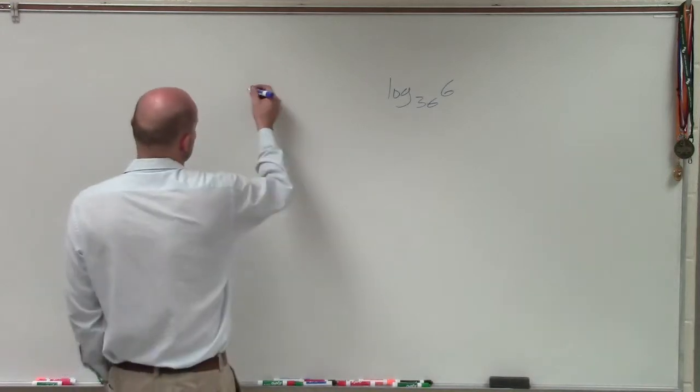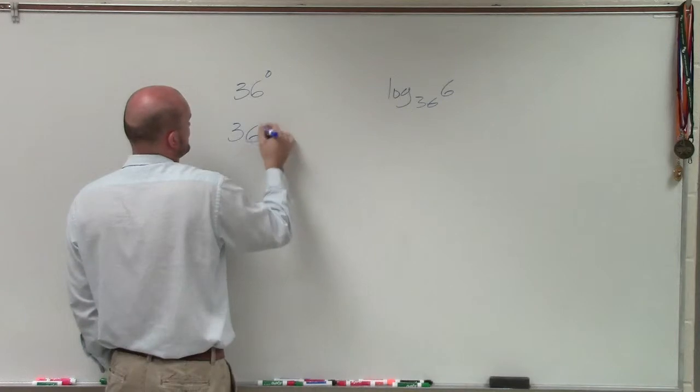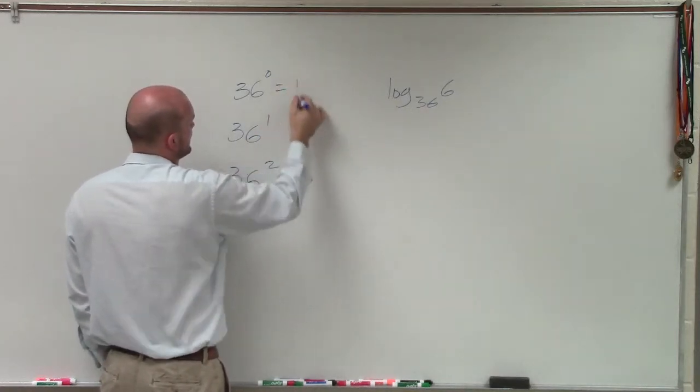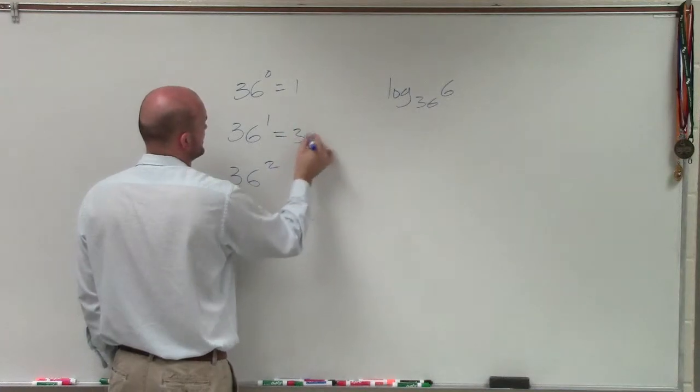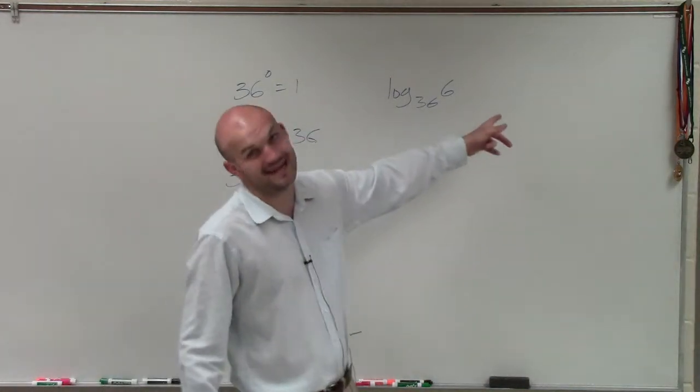So when we look at this, we can just go and choose our numbers. 36 to 0, 36 to the first, 36 to the squared. Obviously, I know that answer is 1. I know that answer is 36. I do not know 36 squared, but obviously I know that 36 squared is not going to be 6.